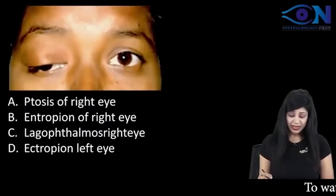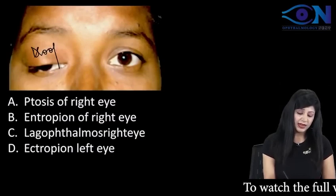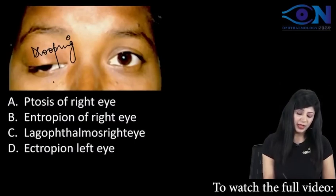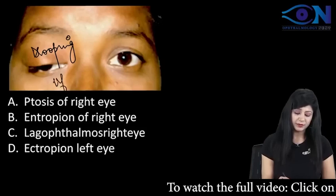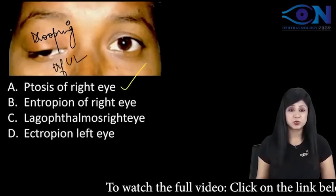Next question: identify. You can see here we have drooping of the upper eyelid. What is drooping of the upper eyelid called? Drooping is called ptosis. So the answer is ptosis here.